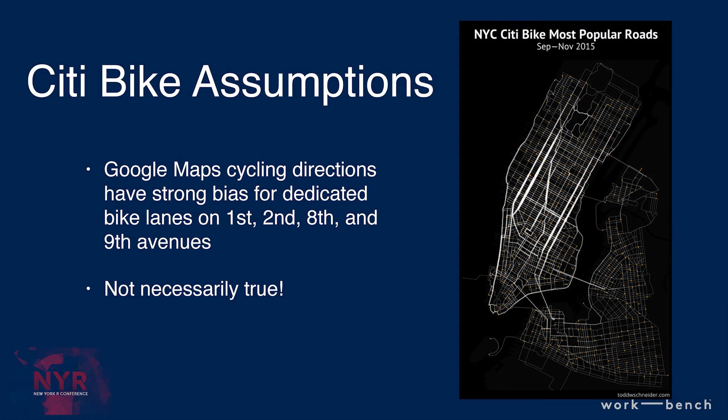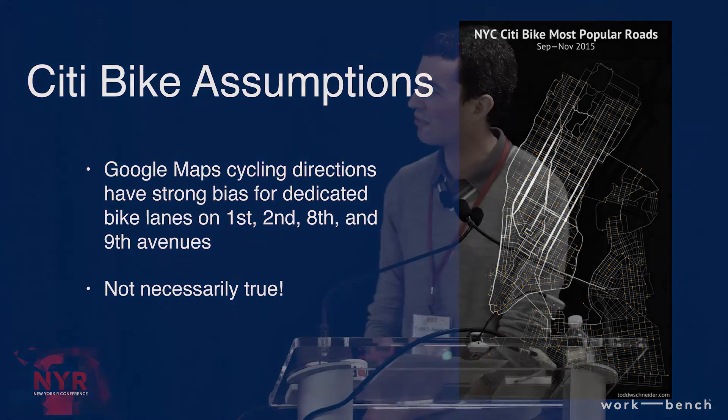There are some assumptions here. If you took just the total throughput on each road of those blue dots, you'd see something like a static map with four thick white lines in the middle — those are First, Second, Eighth, and Ninth Avenues. The reason is that Google Maps has a very strong preference to send people on roads with dedicated bike lanes, which are those avenues in New York. It's important to be aware that the simulation assumes everyone follows these routing rules, which they don't necessarily.